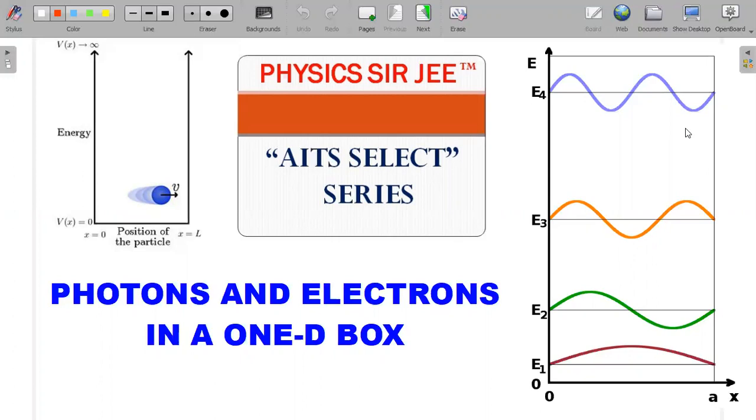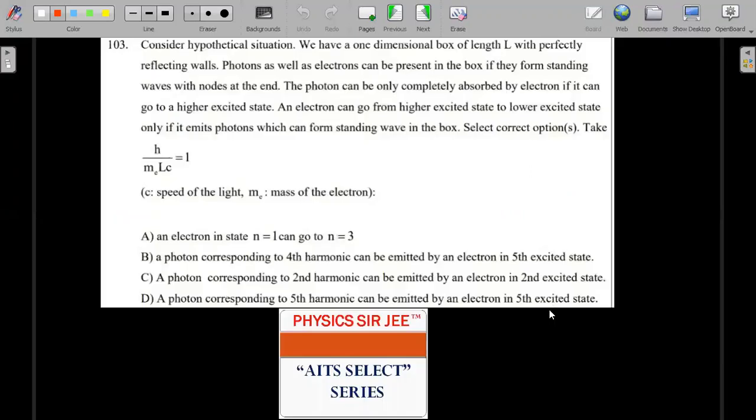The twist here is that in that particular box of length L, it's a one-dimensional box, you have both photons and electrons, and how they are interacting would be the crux of the problem. In case you want to try, this is the formal wording of the question.